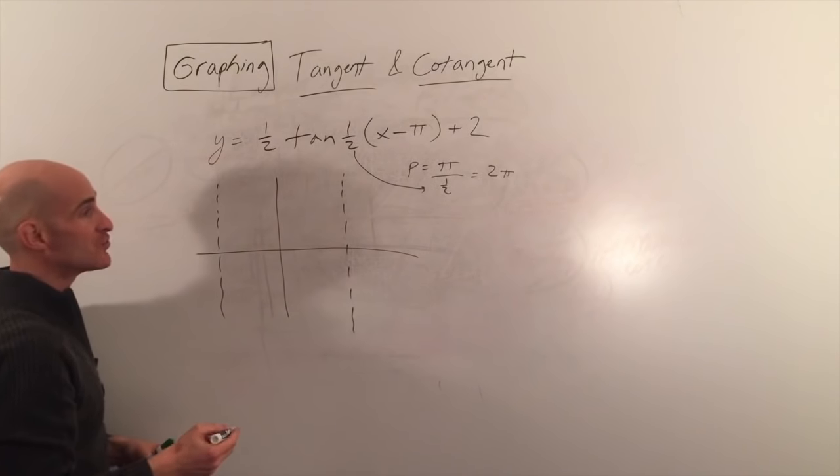The red graph shows the final shifted result. The key is to do it in steps: graph the amplitude and period first, then apply the shift. Now let's do a more challenging cotangent graph: y equals negative cotangent of (2x minus pi over 4).